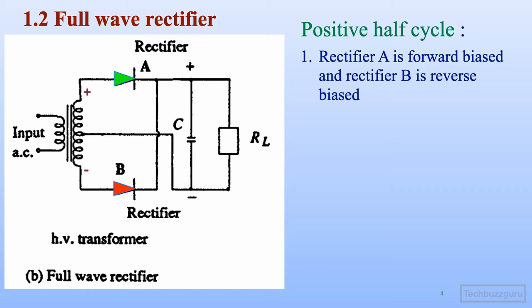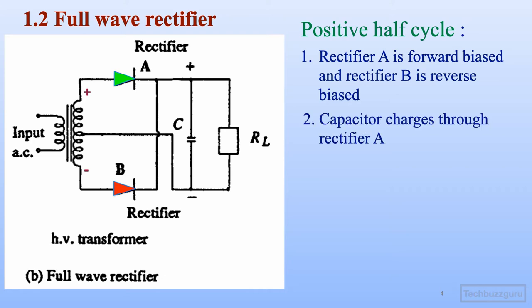During this condition the current flows from the transformer secondary through rectifier A, through load resistance RL, and back to the center tap. Current originates from the upper terminal of the transformer secondary and terminates at the center tap winding terminal. The capacitor connected across the load charges through rectifier A. This way, during the positive half cycle, the capacitor charges and output voltage is available across the load corresponding to the upper section of the transformer secondary.